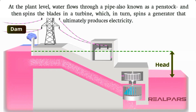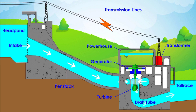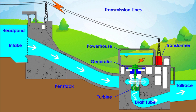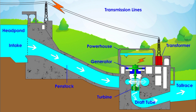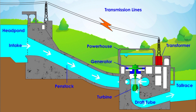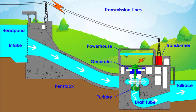At the plant level, water flows through a pipe — also known as a penstock — and then spins the blades of a turbine, which in turn spins a generator that produces electricity. Most conventional hydroelectric facilities operate this way, including run-of-the-river systems and pumped storage systems.